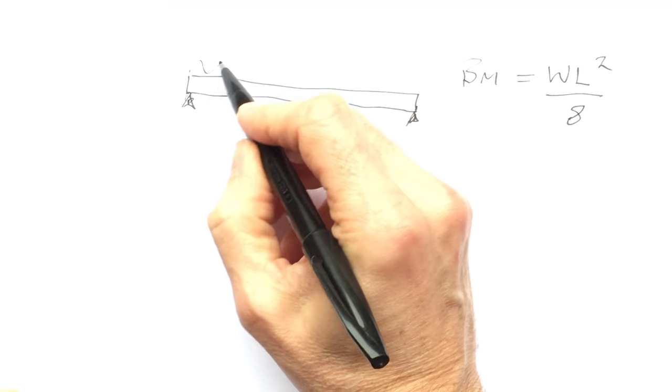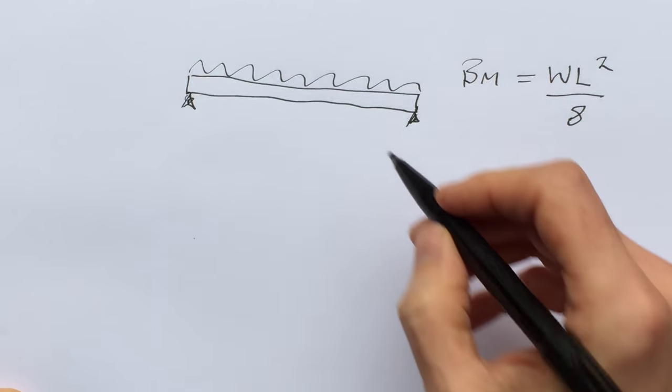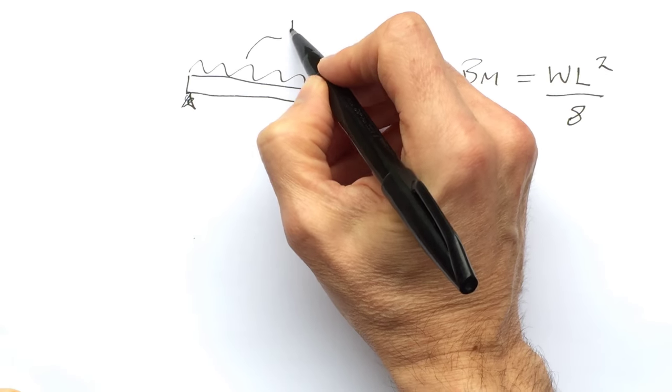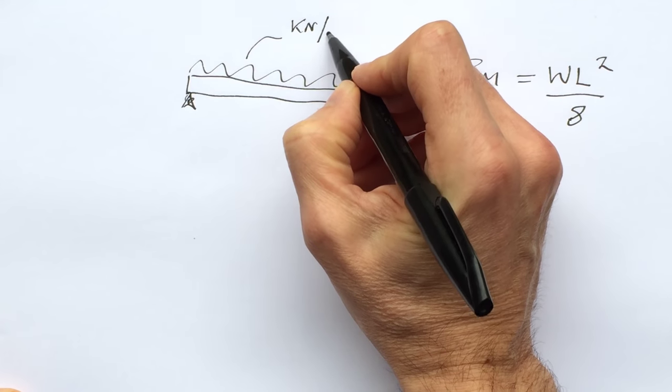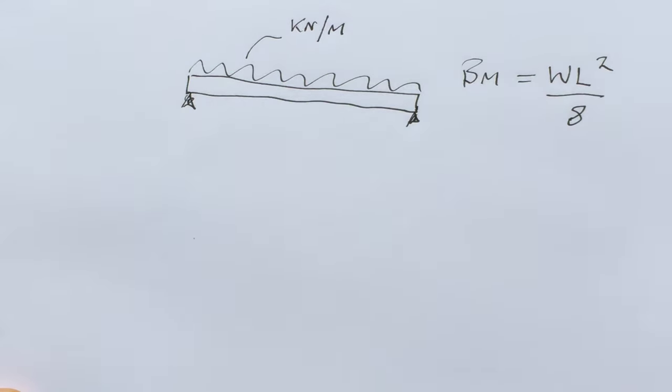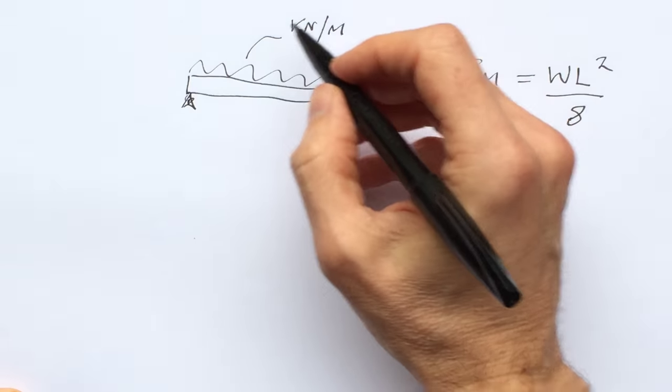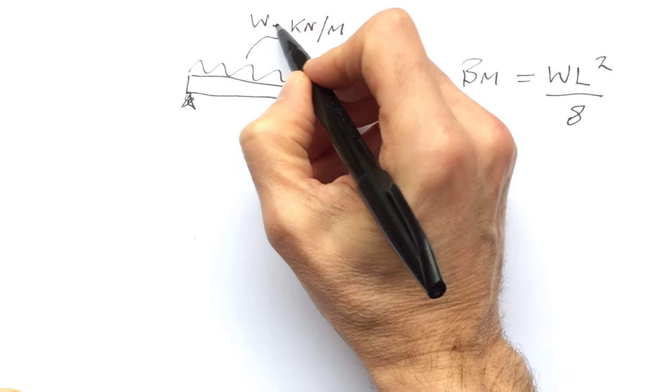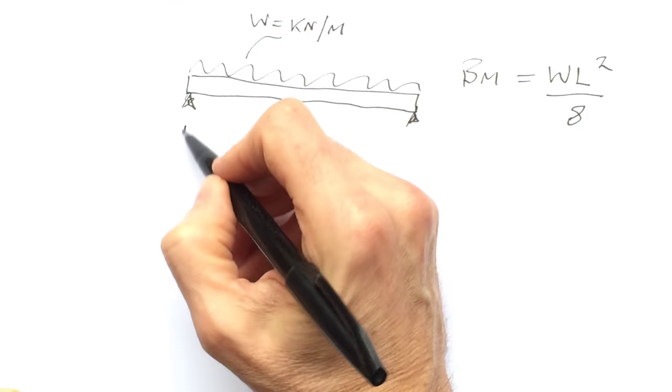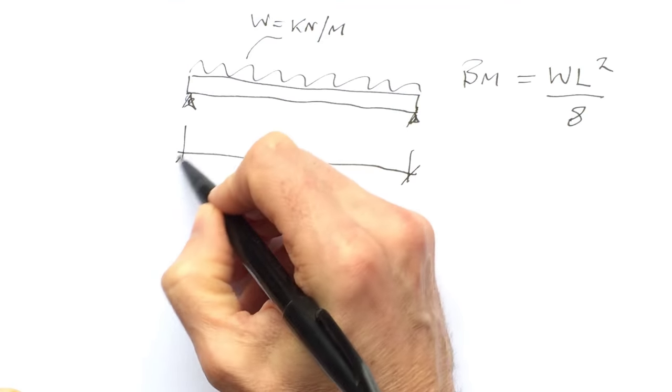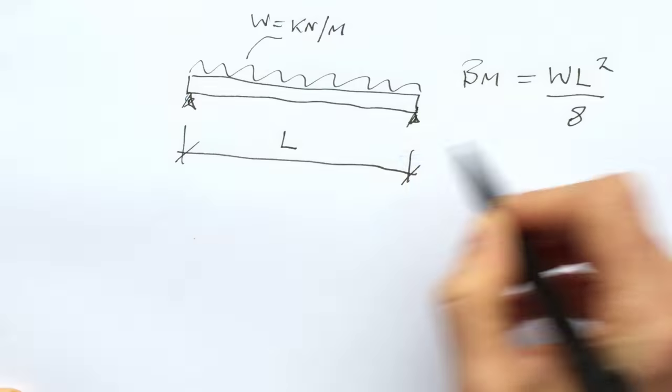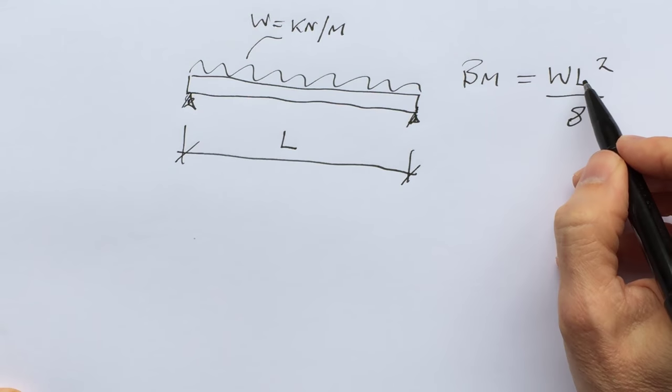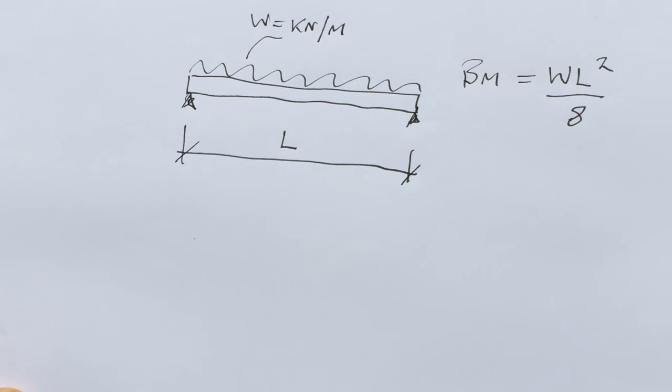So if we have a load sitting on this timber beam, it's a certain number of kilonewtons per meter, then that will be our W. Our length will be the length of the beam between the supports, and as you can see, that's the only two details we need to get the bending moments.